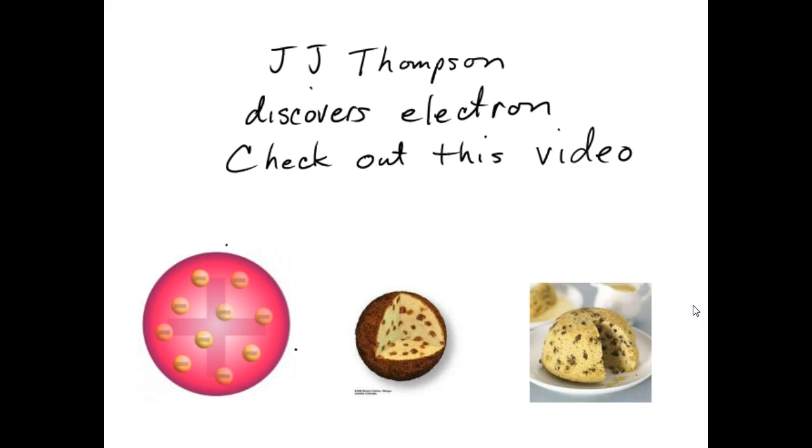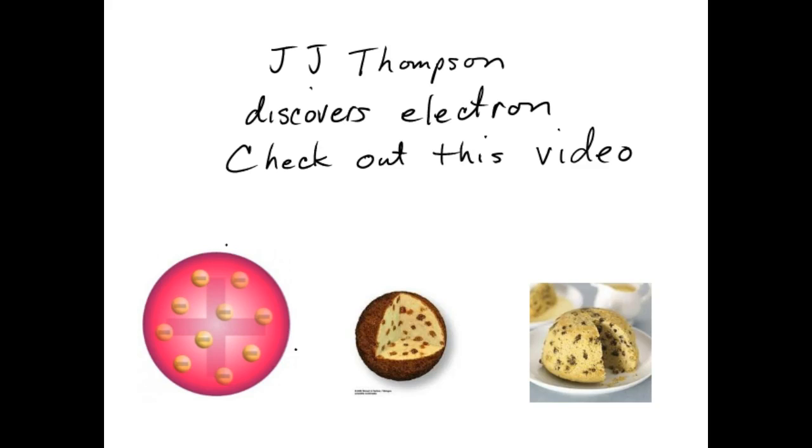A bit later, a guy named JJ Thompson was investigating electricity, and he discovered the electron. Let's check out this video. Wow. Electrons are moving in the electricity in this cathode ray tube. And they actually make that little wheel spin around. So JJ Thompson deduced that there must be little negative particles in electricity, and he called them the electron.